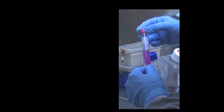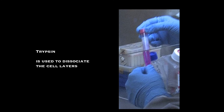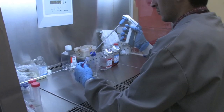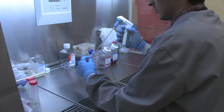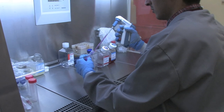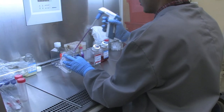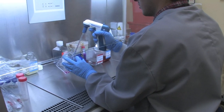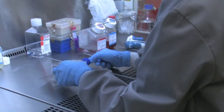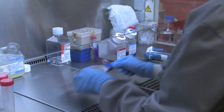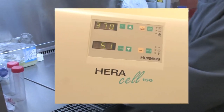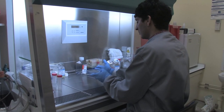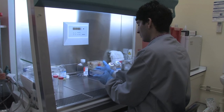Pre-warmed trypsin is then added to the attached cell layer. Approximately 2ml of trypsin per 25cm² culture surface area should be added. The flask is then placed in a 37 degrees incubator for 5 minutes. The flask may be tapped gently in order for the cells to detach.